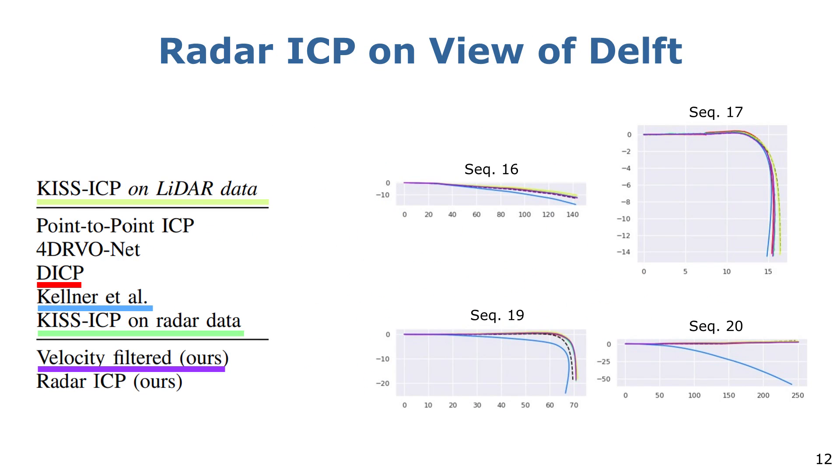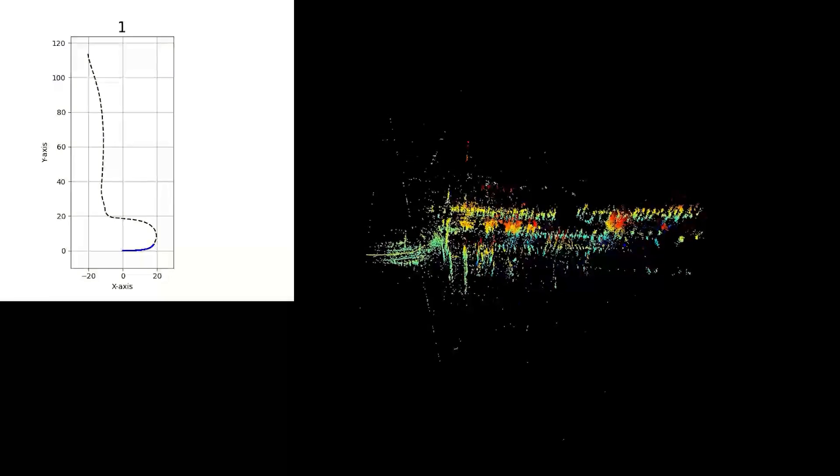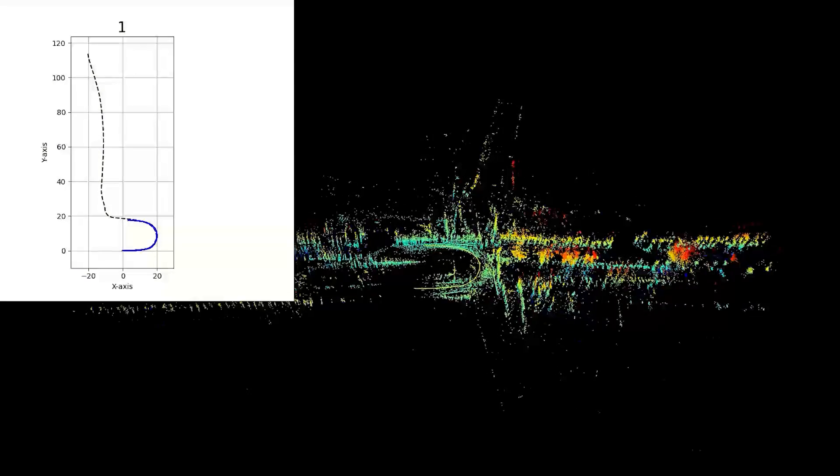Here, you observe some comparisons between our method and the baselines in various sequences of the View of Delft dataset. We observe how the drift achieved by our approach is minimal and closely matches the results obtained using LiDAR. In this video, we can observe an example of our approach in a real-world scenario from the View of Delft dataset, where the map is being incrementally constructed while the poses are estimated. The dotted line represents the ground truth, while the continuous blue line represents our estimation.